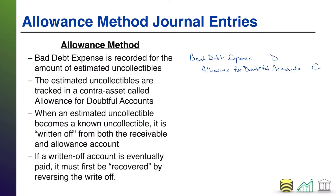We're going to write off that receivable from our books. Since a receivable is an asset, to write it off we credit it — credit accounts receivable. When you get paid normally, it's cash debit, AR credit. The difference here is we're not getting money — the receivable is still coming off the books, but we're not collecting cash for it.